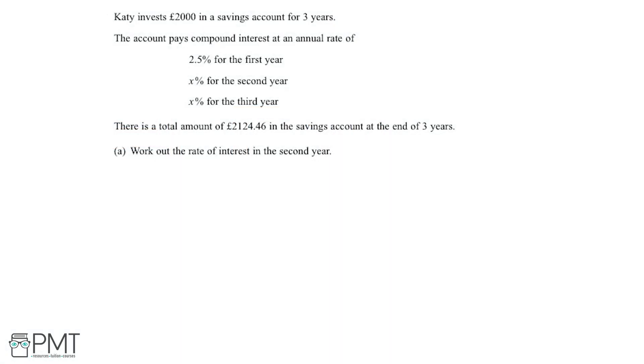KT invests £2,000 in a savings account for three years. This account pays compound interest at an annual rate of 2.5% for the first year and x% for the second and third years. There is a total amount of £2,124.46 in the savings account at the end of the three years and part A says we need to work out the rate of interest in the second year.